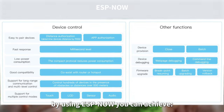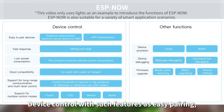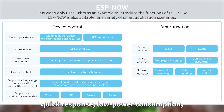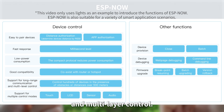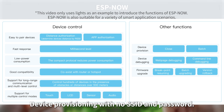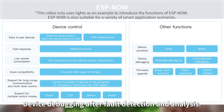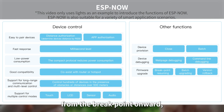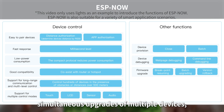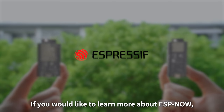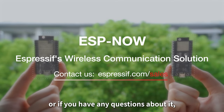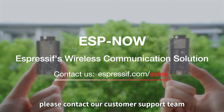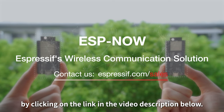All in all, by using ESPNOW you can achieve device control with features such as easy pairing, quick response, low power consumption, good compatibility, long-distance communication, and multi-layer control. Additional capabilities include device provisioning without SSID and password, device debugging with fault detection and analysis, firmware updates with breakpoint resumption, simultaneous upgrades of multiple devices, and version reset. To learn more about ESPNOW — Espressif's wireless communication solution — or if you have any questions, please contact the customer support team via the link in the video description below.